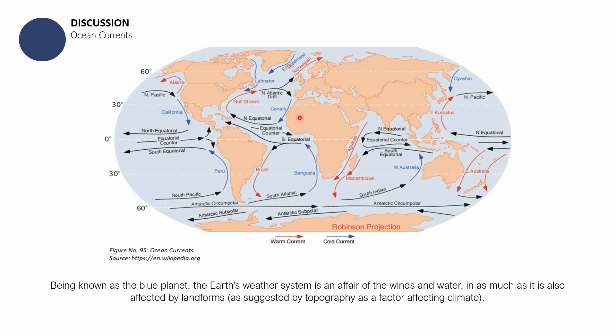Being known as the blue planet, the Earth's weather system is an affair of the winds and water, as much as it is also affected by landforms. The climate is affected by certain landforms, by mountains, by bodies of water. But it is much like an affair of the winds and water—the water in our oceans, Pacific, Indian Sea, and other seas and large bodies of water such as oceans, or even a small river has the ability to affect the climate and weather of the place.